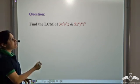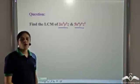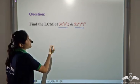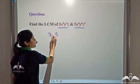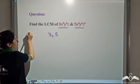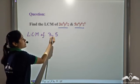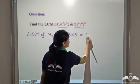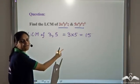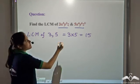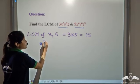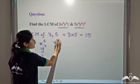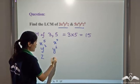Now can you find the LCM of these two terms? In order to find the LCM, we consider the numerical parts first — that is 3 and 5. The LCM of 3 and 5 is 3 × 5 = 15, because they do not have a common factor. Now we consider the algebraic parts: the first term has x⁵, y³ and z; the second term has x⁴, y⁶ and z⁵.